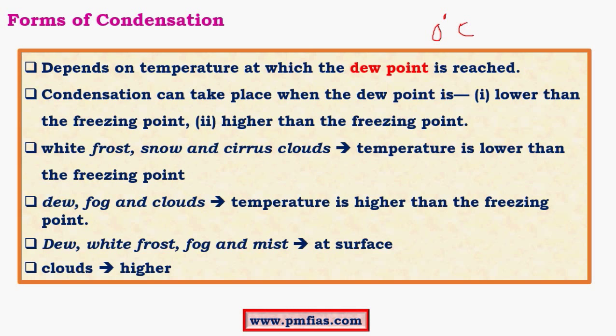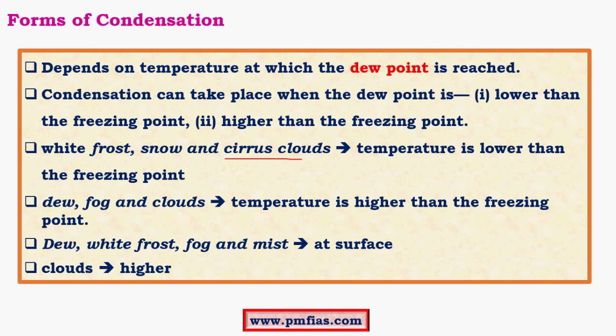When the dew point, that is the saturation point, is above 0 degrees Celsius we see things like dew, fog and clouds which have water vapor. Whereas when the dew point is below 0 degrees Celsius we observe frost, snow and cirrus clouds. Cirrus clouds are at greater heights just below the tropopause and in the upper levels of the tropopause as well as lower layers of the stratosphere. Cirrus clouds are very high clouds and they exist usually in the form of ice crystals. So these are the ones where condensation occurs below freezing point, that is 0 degrees Celsius.